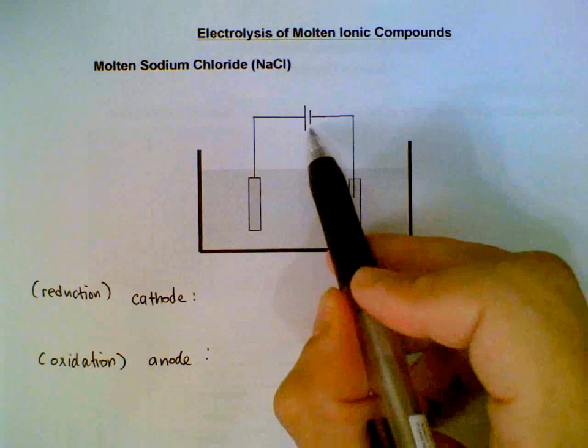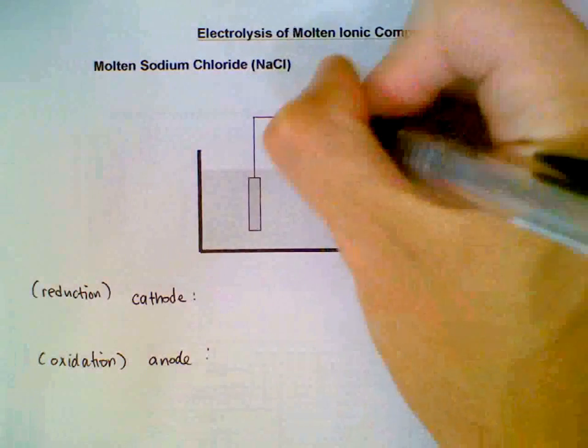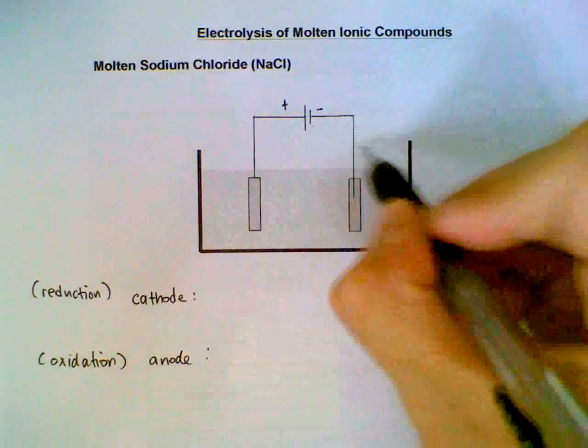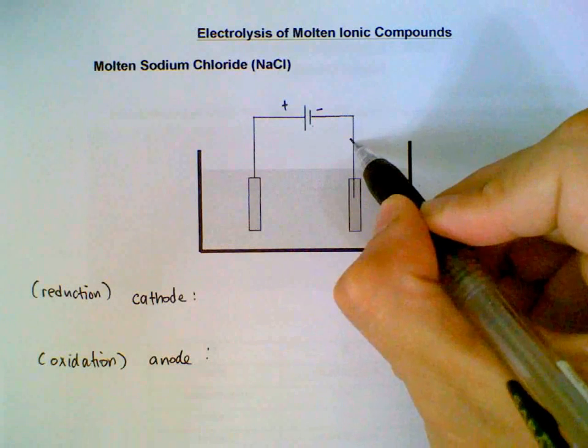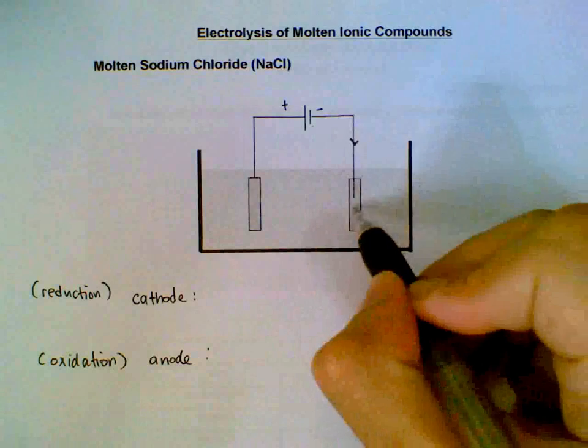First, for molten sodium chloride, we tackle the battery. This shorter end is the negative terminal, the longer end is the positive terminal. The electrons come from the negative terminal and go to this electrode, so this electrode will be the negative electrode. The other electrode will be the positive electrode.